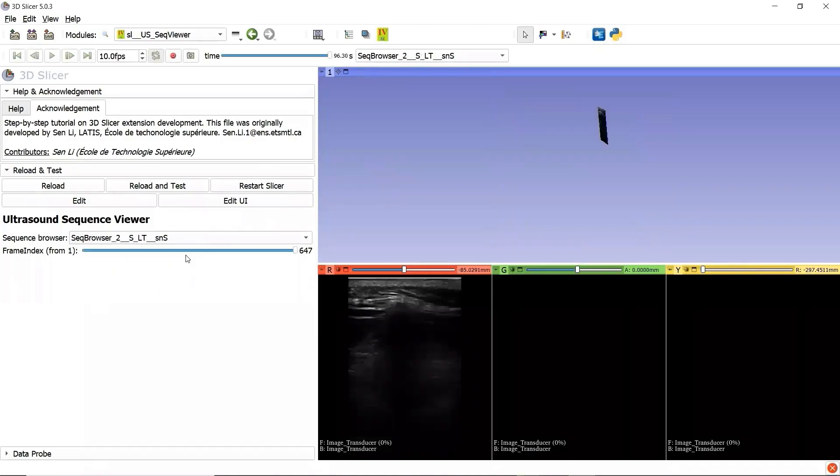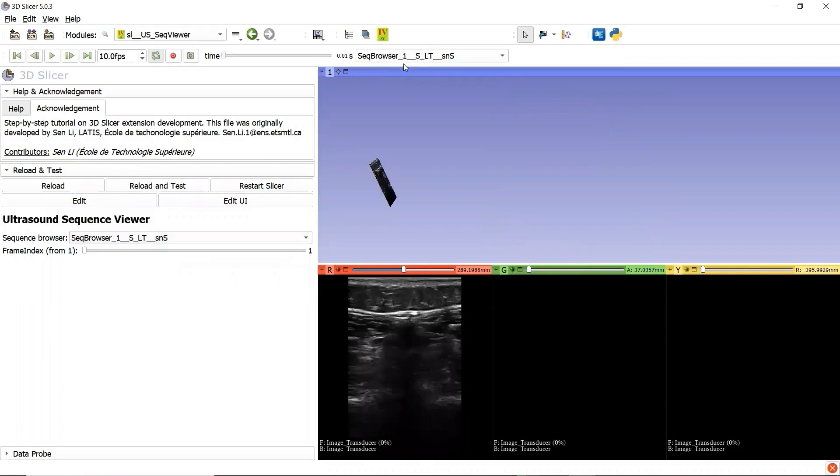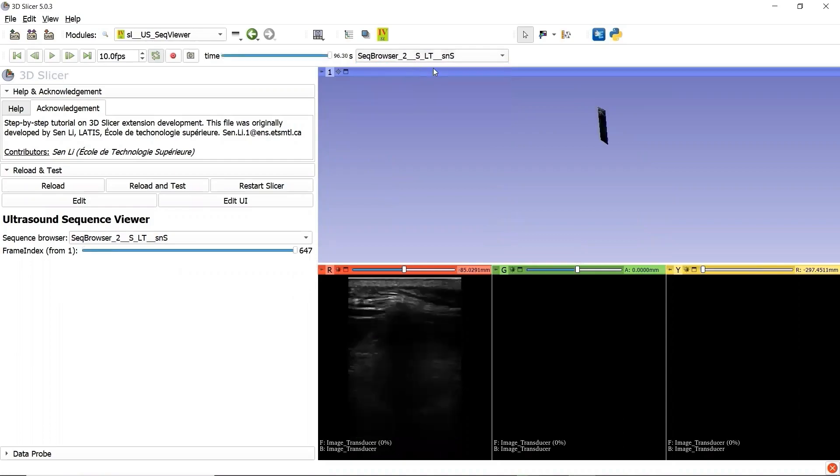When we change the active Sequence Browser node from our module, the Sequence Viewer, given by 3D slicer, updated. And when we change the active Sequence Browser node from the viewer given by 3D slicer. Wow,